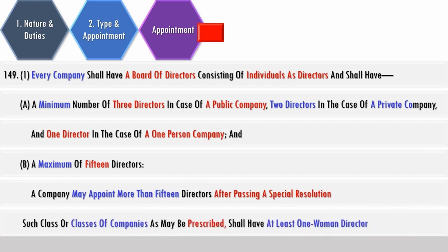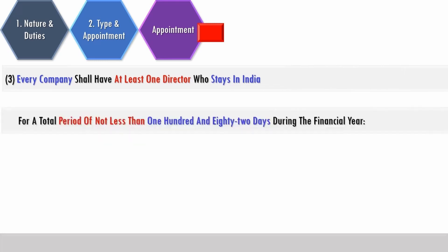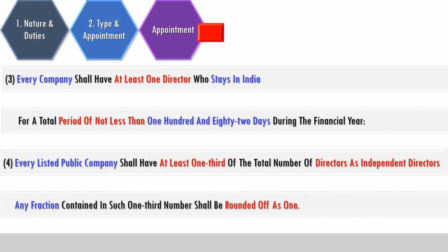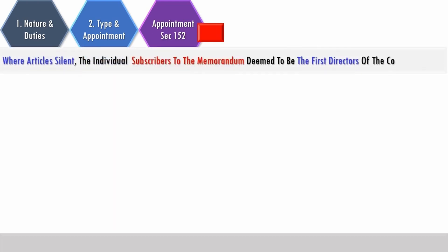Such class or classes of companies as may be prescribed shall have at least one woman director. Every company shall have at least one director who stays in India for a minimum of 182 days during the financial year. Every listed company shall have at least one-third of the total number of directors as independent directors; any fraction shall be rounded off as one. Where articles are silent, subscribers to the memorandum are deemed to be the first directors of the company.